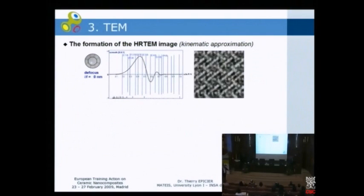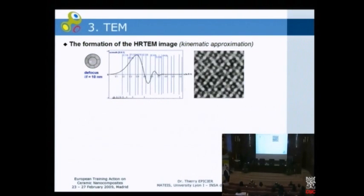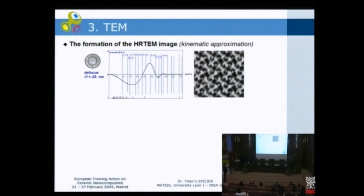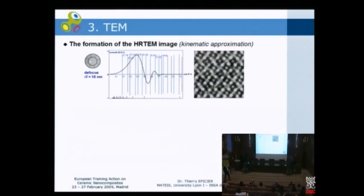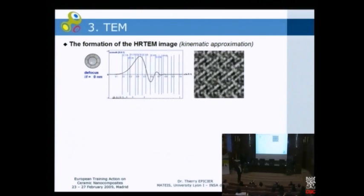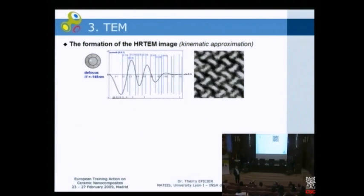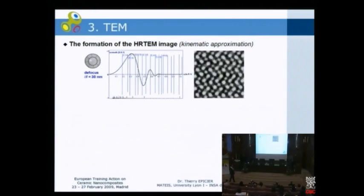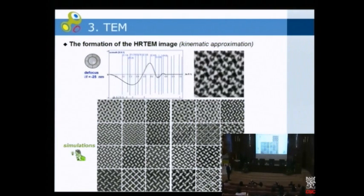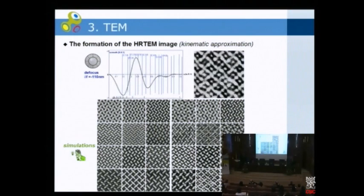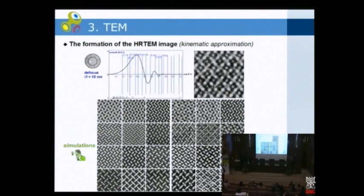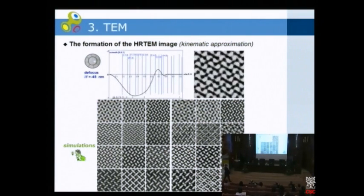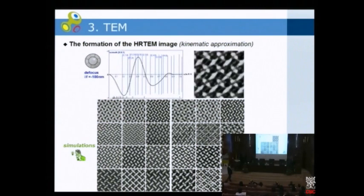The user can change the focus, which changes the shape of the contrast transfer function and thus the image appearance. The problem is: where are the atoms? You can run simulations with dedicated software and match models to experimental images to get a clear idea of the atomic structure. We can still match any model to the experimental image to understand the material's atomic structure.